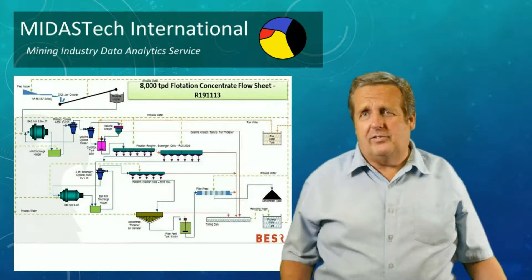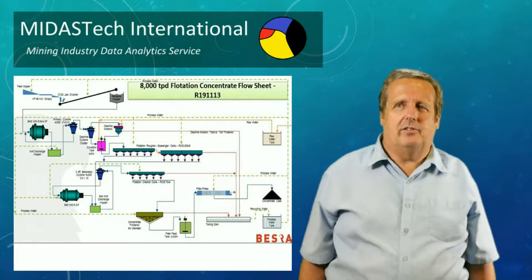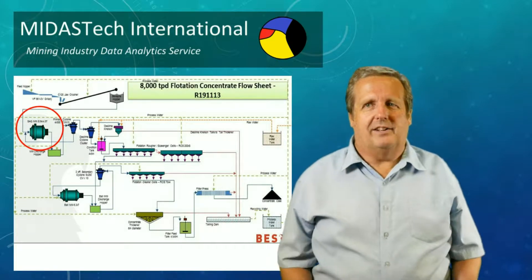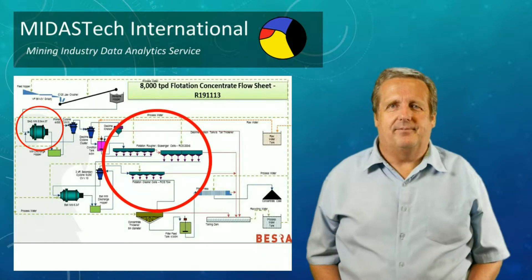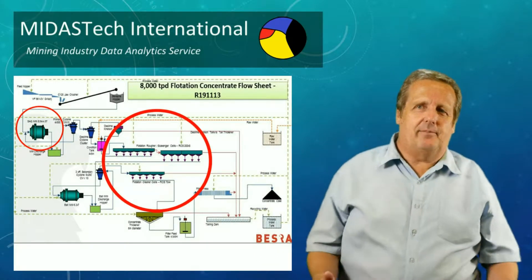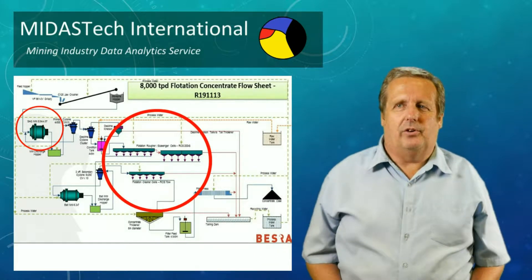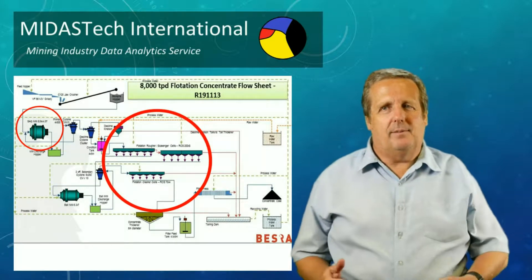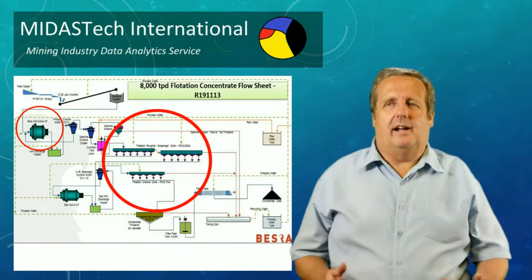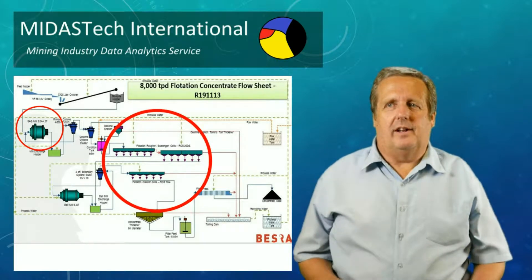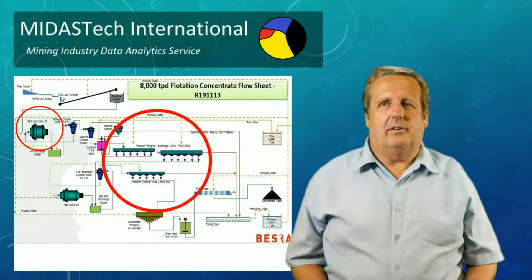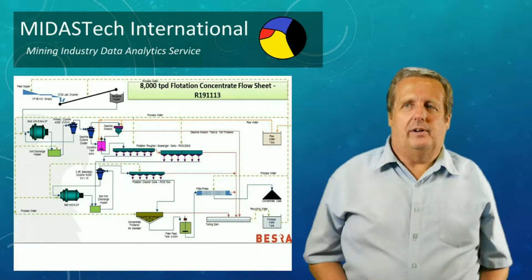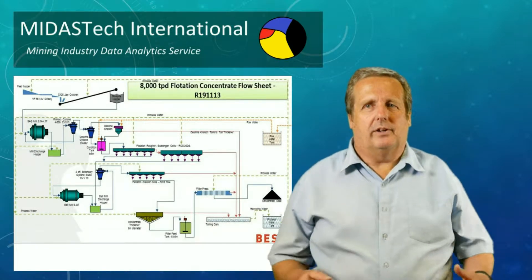Perhaps the easiest way to explain optimisation is to consider the link between comminution, or breakage, and eventual separation. It's tempting to reduce the energy of comminution, but if we do so then the mineral within the particles is not liberated. If we recover the mineral, a lot of the gangue mineral is also recovered, so the grade of the mineral is too low, and hence smelting costs will increase.